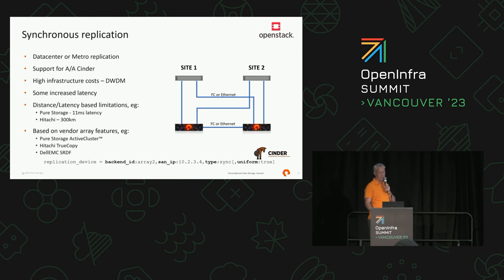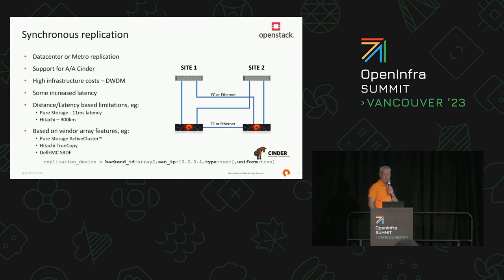Here's a simple config example of what synchronous replication looks like. The only real difference from async is that type is set to sync, and you have to specify that explicitly if you want sync. The optional uniform true parameter is very much Pure-specific. Every vendor is slightly different, so you must read their documentation about how to configure their replication device parameter.